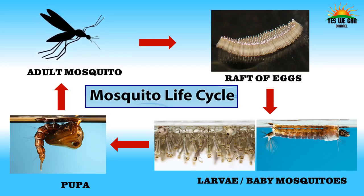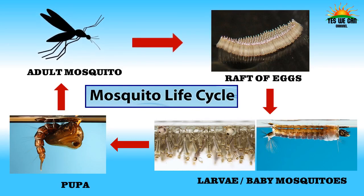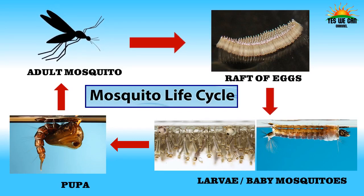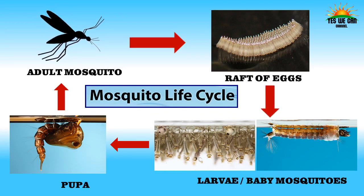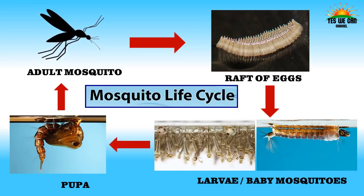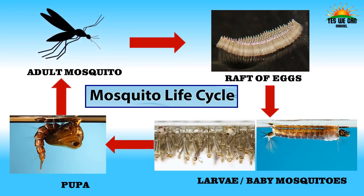Mosquitoes lay their eggs on the surface of fresh or stagnant water or on damp soil — in tin cans, barrels, ponds, swimming pools, puddles, ditches or marshy areas. The eggs are stuck together and float on the water surface. The larva lives in water and comes to the surface to breathe, hanging upside down. Anopheles larvae lie parallel to the water surface to get oxygen. The larva changes into a pupa, and then the adult mosquito emerges. The newly emerged adult rests on the water surface to dry its wings before it can fly.